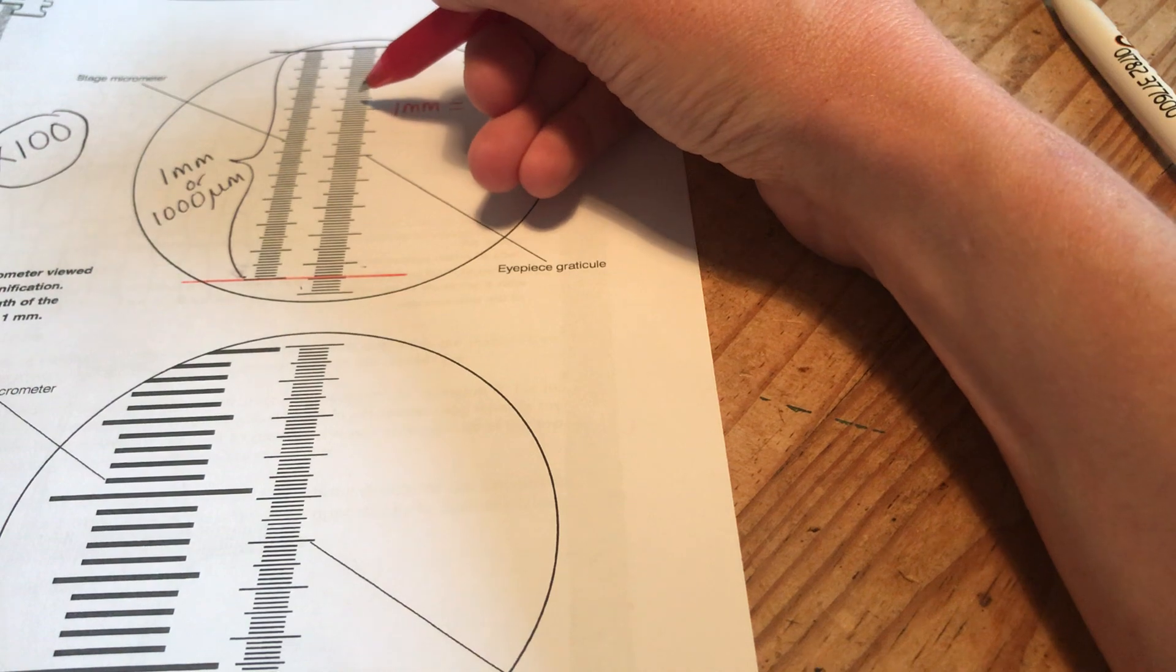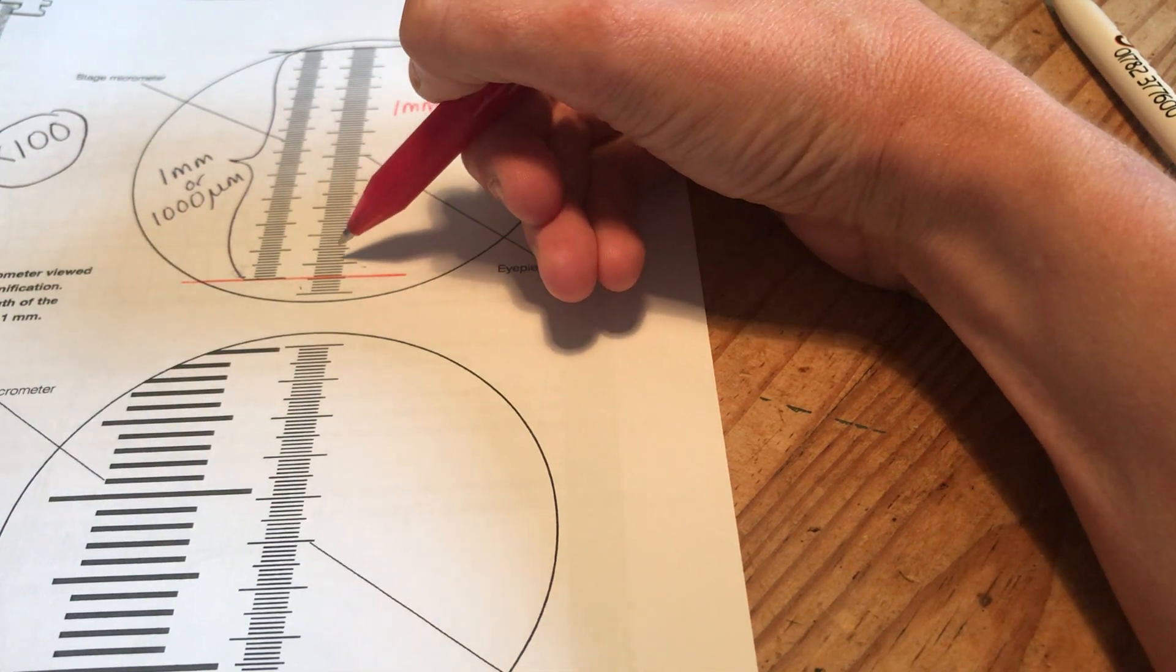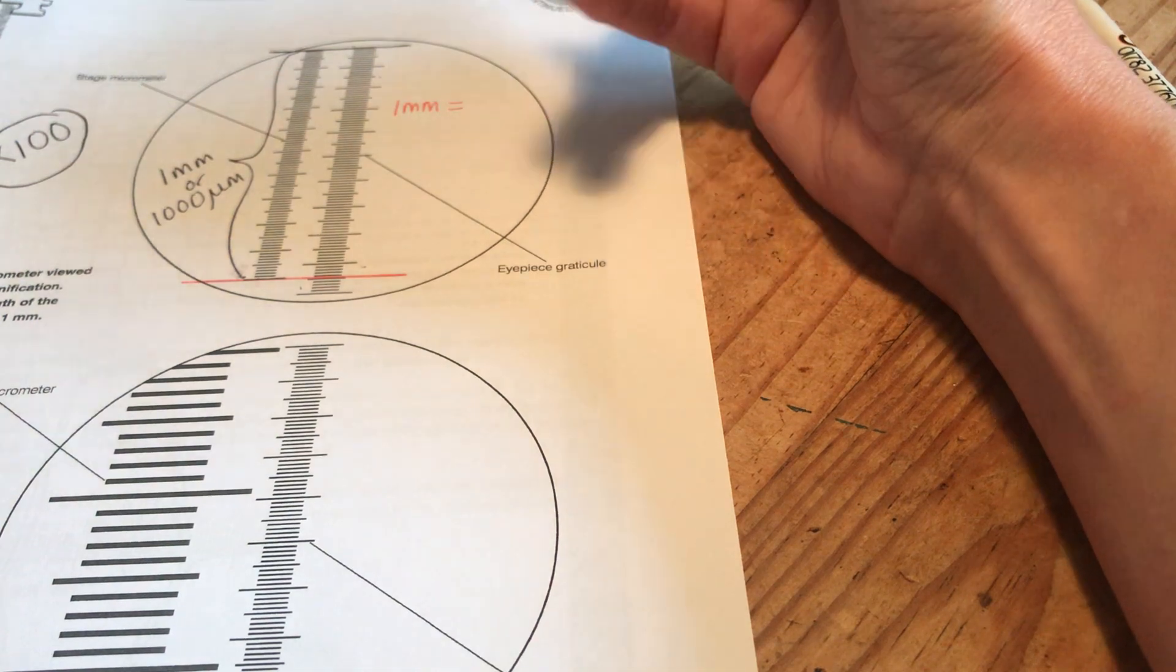So 10, 20, 30, 40, 50, 60, 70, 80, 90, 94 little lines.